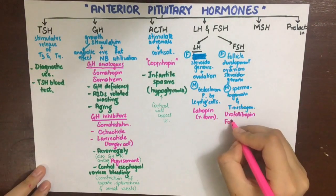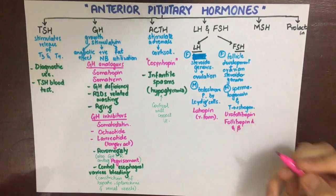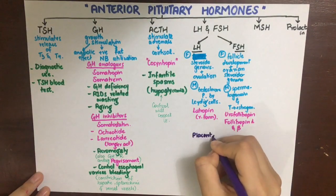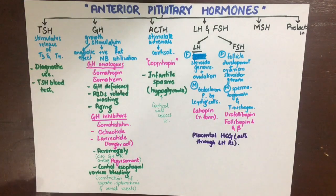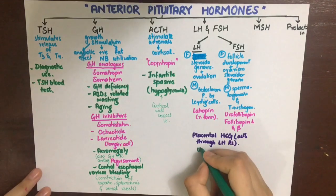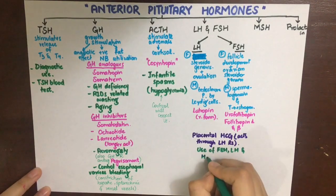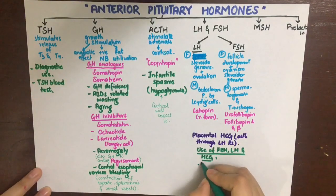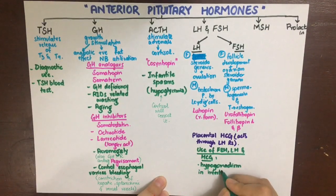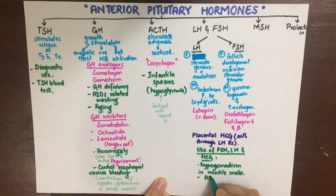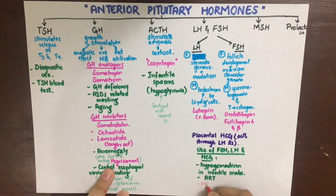Another hormone to note here is human chorionic gonadotropin (HCG), secreted by the placenta during pregnancy to maintain the corpus luteum. HCG also acts via LH receptors. FSH, LH, and HCG can all be used to treat hypogonadism in infertile males and in assisted reproductive technology (ART) to cause ovarian hyperstimulation. Side effects of ovarian hyperstimulation include multiple pregnancies and gynecomastia in males.